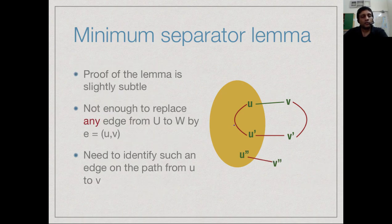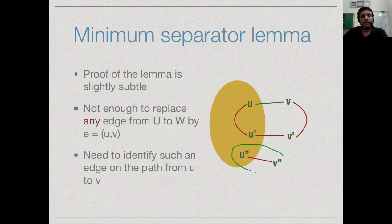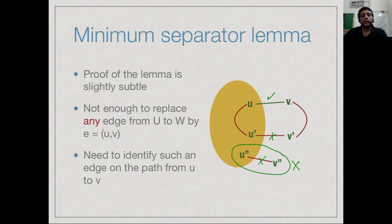One important caution: we must be careful about which edge we replace. We cannot pick an arbitrary edge crossing the boundary, because removing it might disconnect some other vertex. We must follow the path in T from U to V — that path must cross the boundary somewhere — and replace exactly that crossing edge. This ensures the new tree T-prime remains connected and valid.